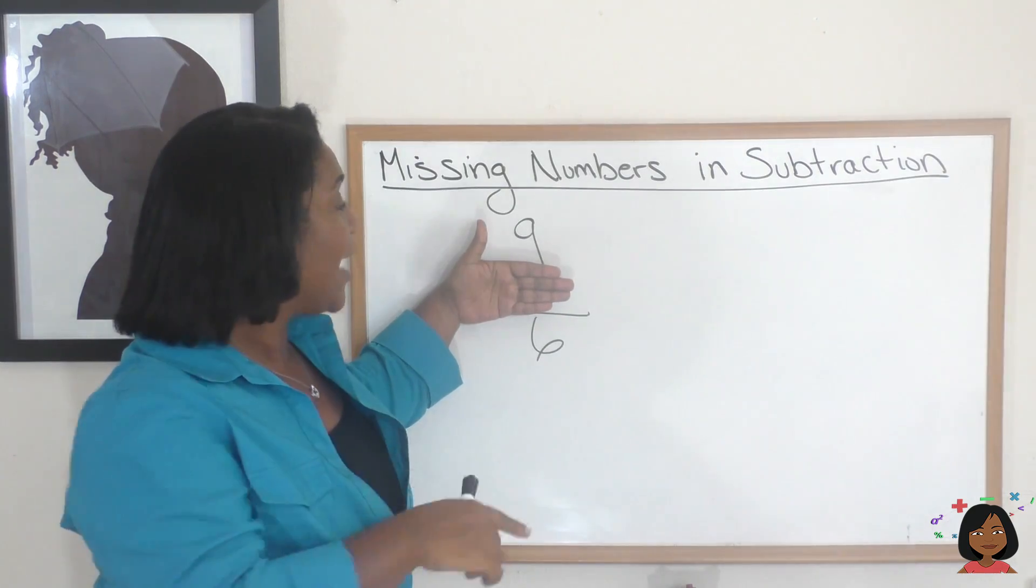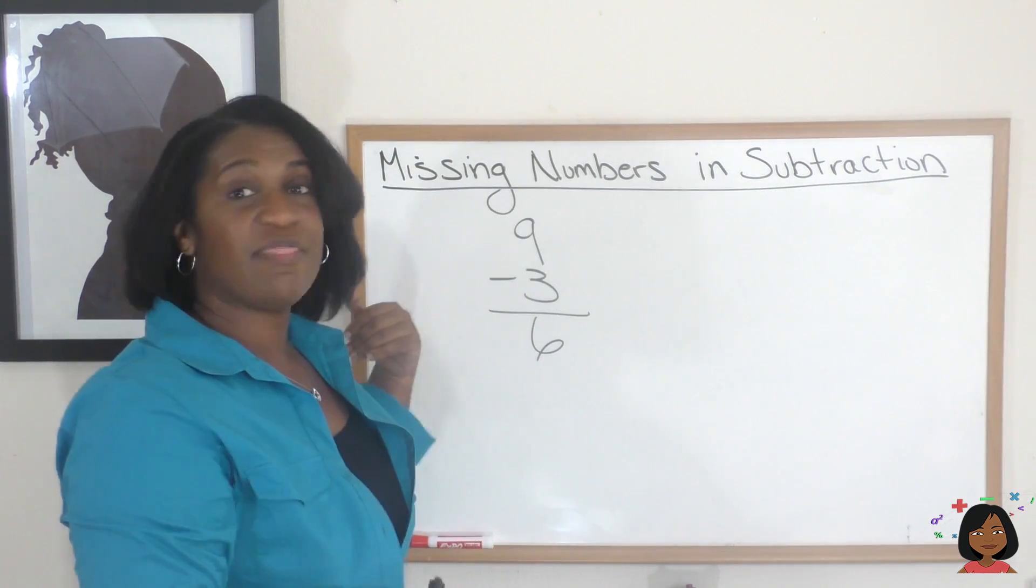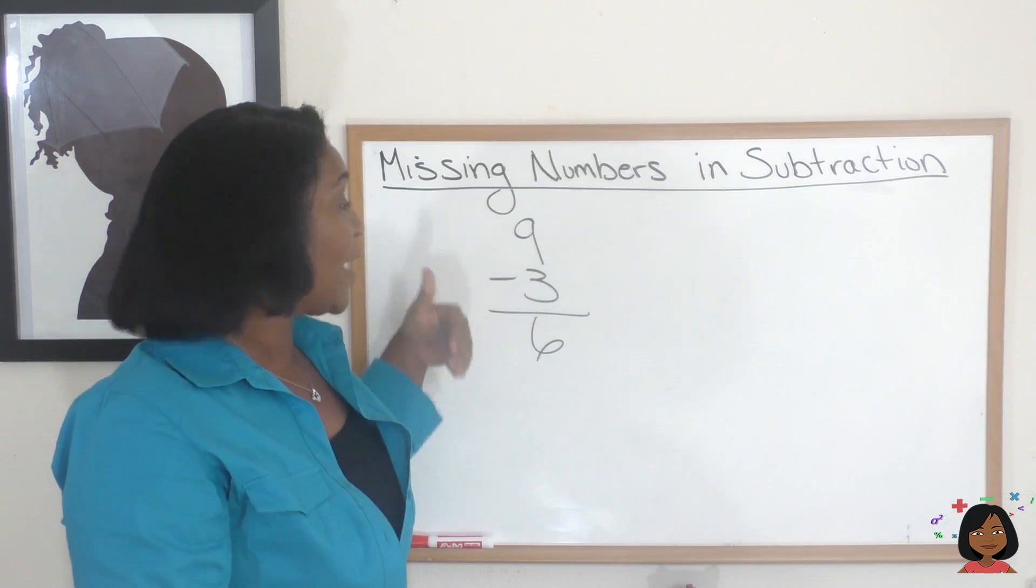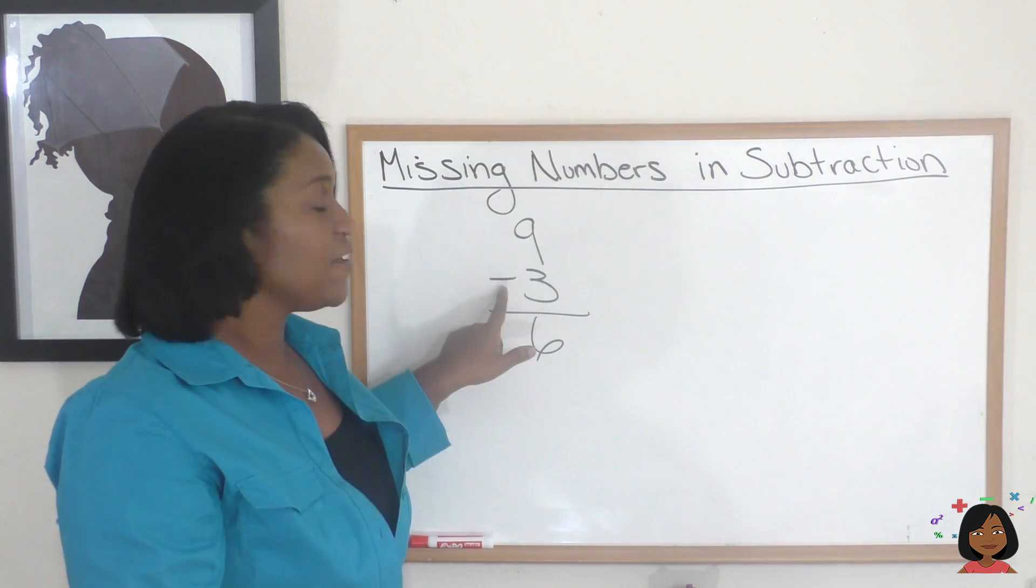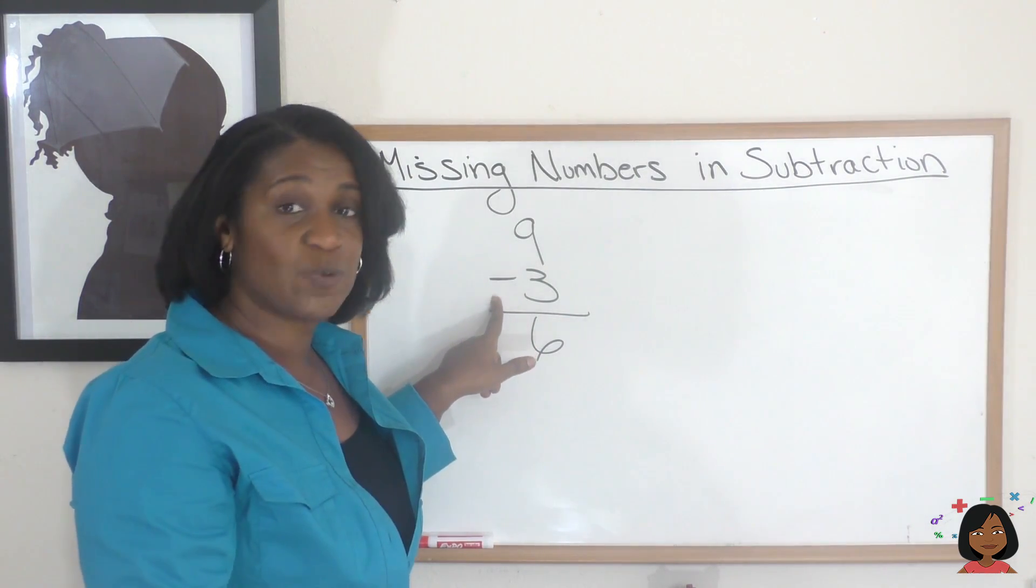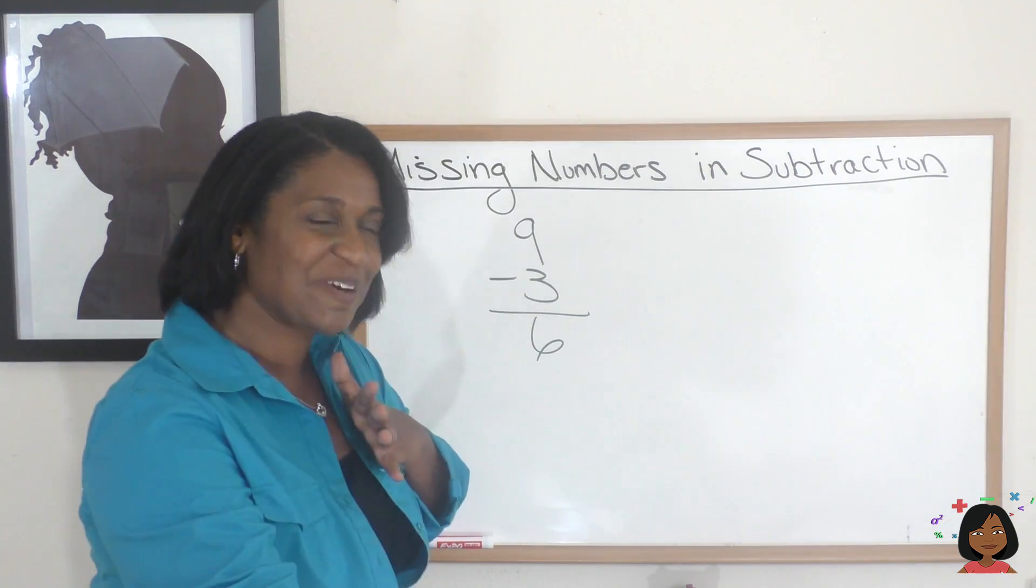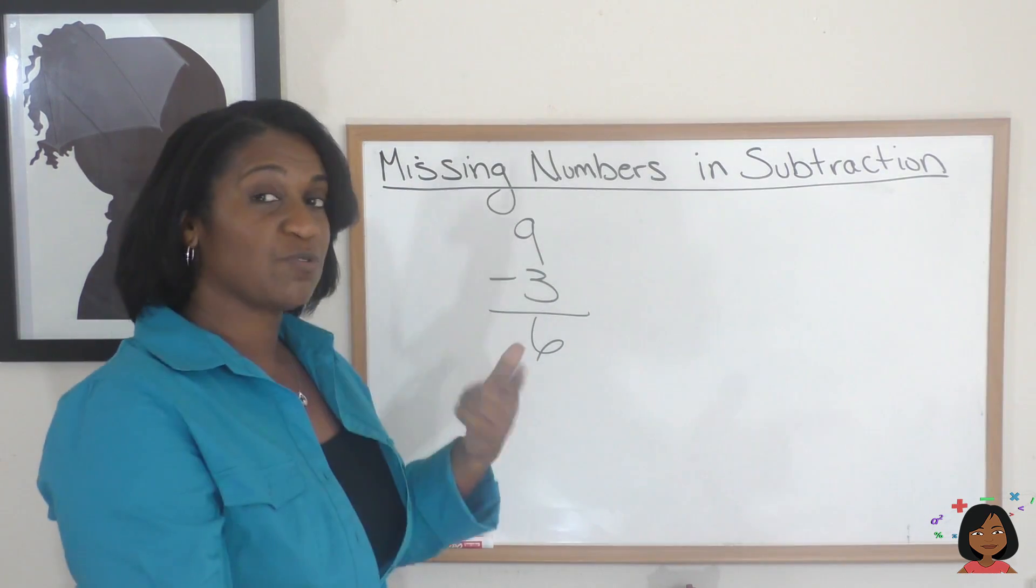You've got it. I could subtract 9 minus 6, and that would give me 3. So I could use subtraction to figure out the number that's in this place, which is what's called the subtrahend, if you remember correctly. So I could use subtraction.